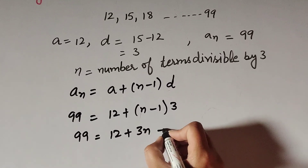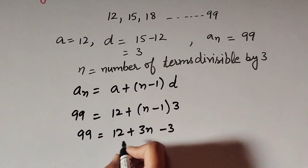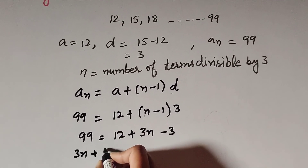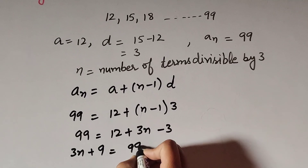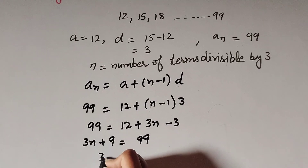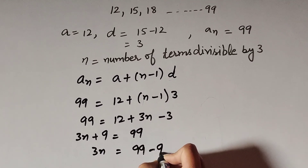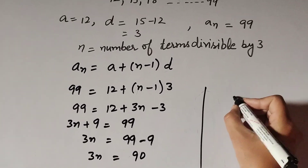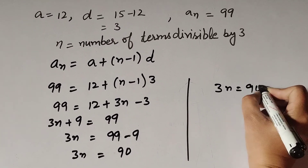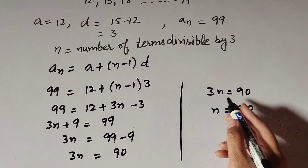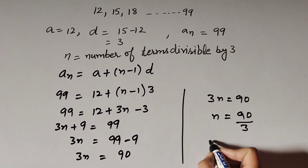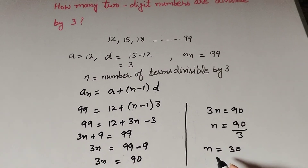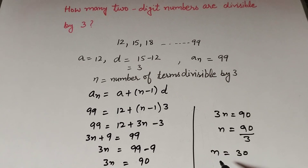Expanding: 99 = 12 + 3n − 3, which gives 99 = 9 + 3n. Transposing 9 to the right-hand side: 3n = 99 − 9 = 90. Dividing both sides by 3: n = 90 ÷ 3 = 30. So the total number of two-digit terms divisible by 3 is equal to 30.